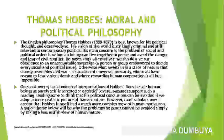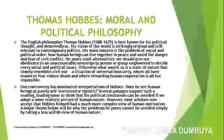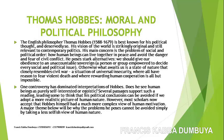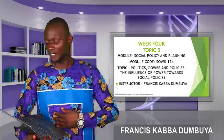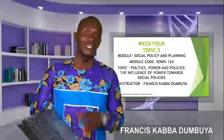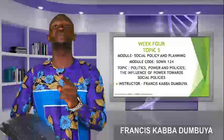Now let's look at Thomas Hobbes and his moral and political philosophy. Thomas Hobbes, an English philosopher born in 1588 and died in 1679, is best known for his political thought. His view of the world is strictly original and still relevant to contemporary politics. His main concern was the problem of social and political order: how human beings can live together in peace and avoid the danger and fear of civil conflict. For Thomas Hobbes, his concern was how individuals can live in peace, how society can be stable, and for him, the only way society can be stable is when we have a government, laws, and policies.